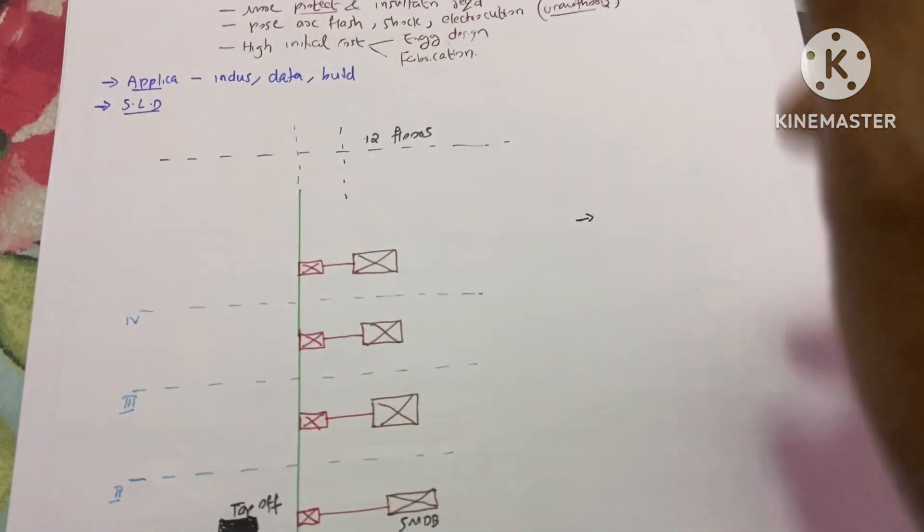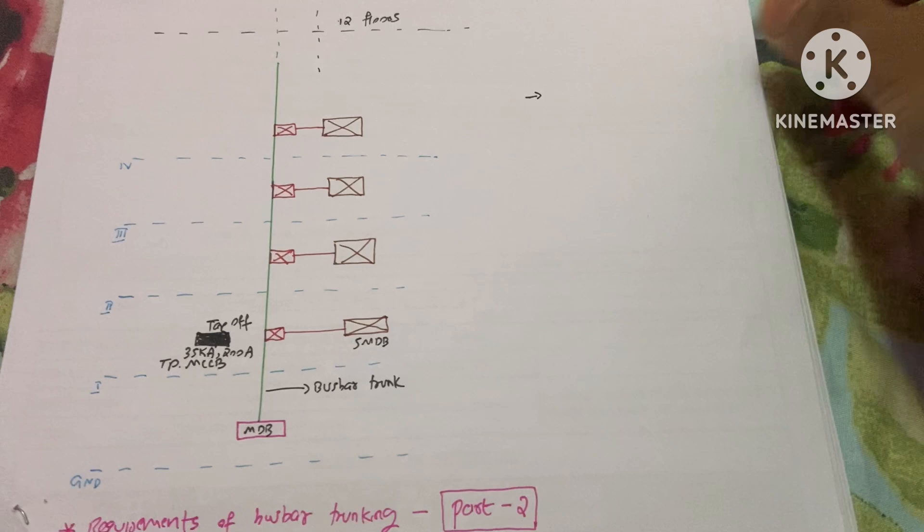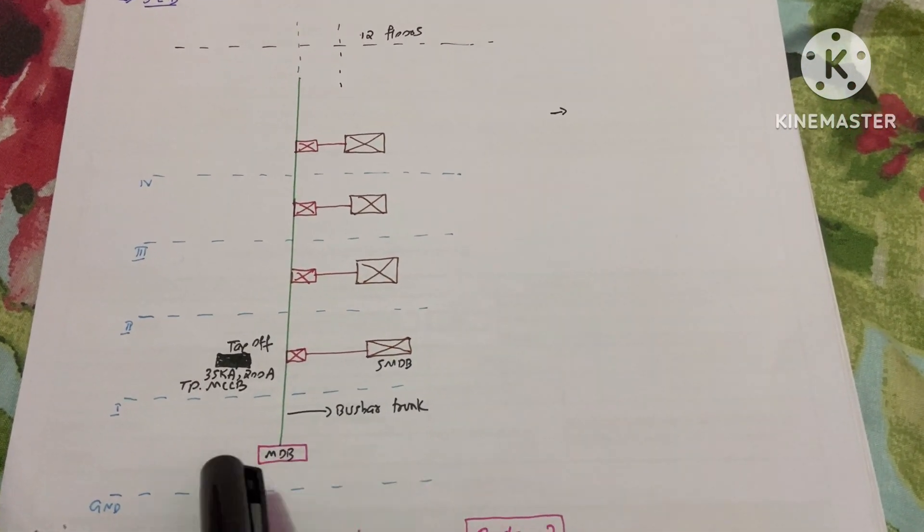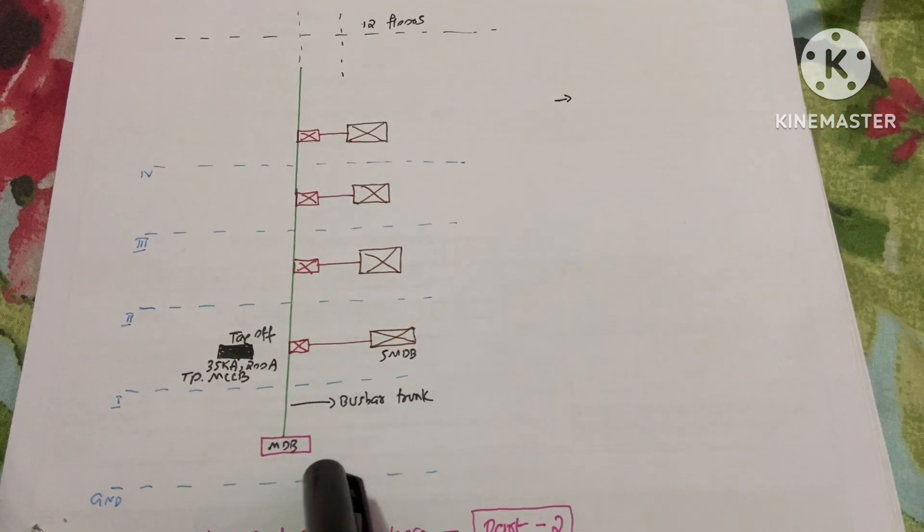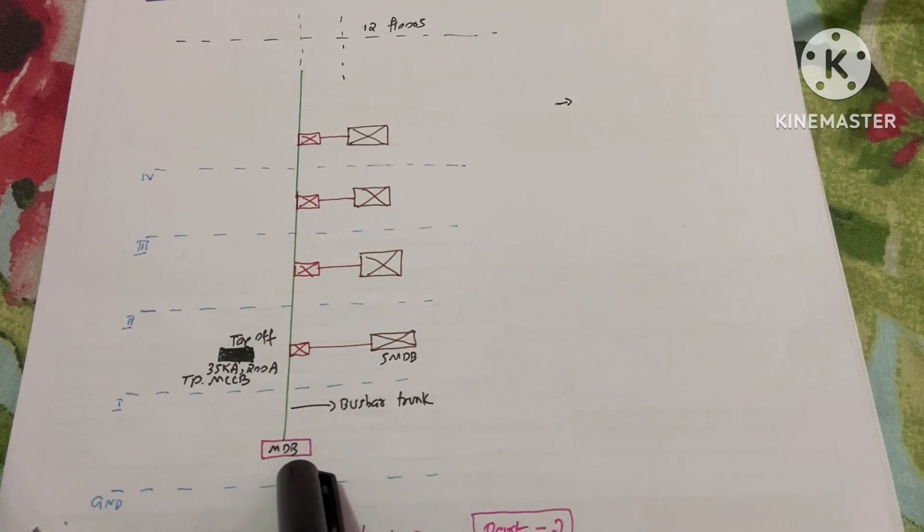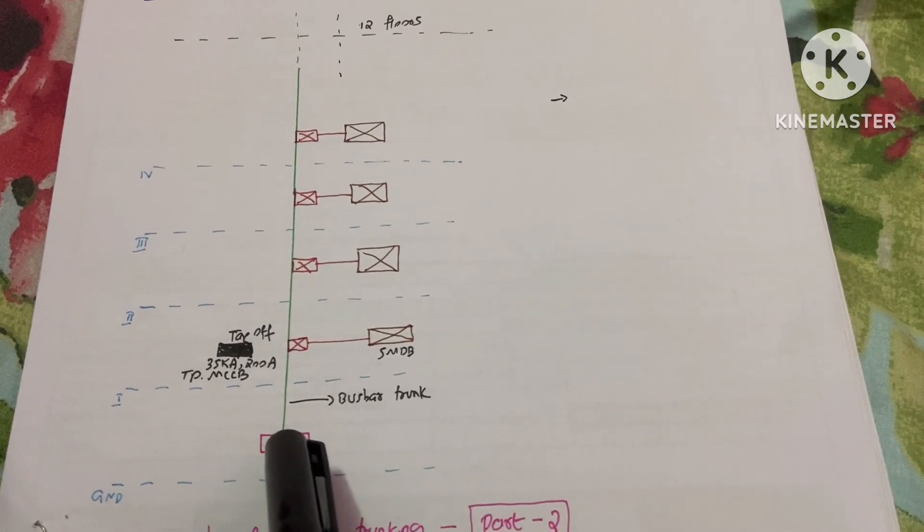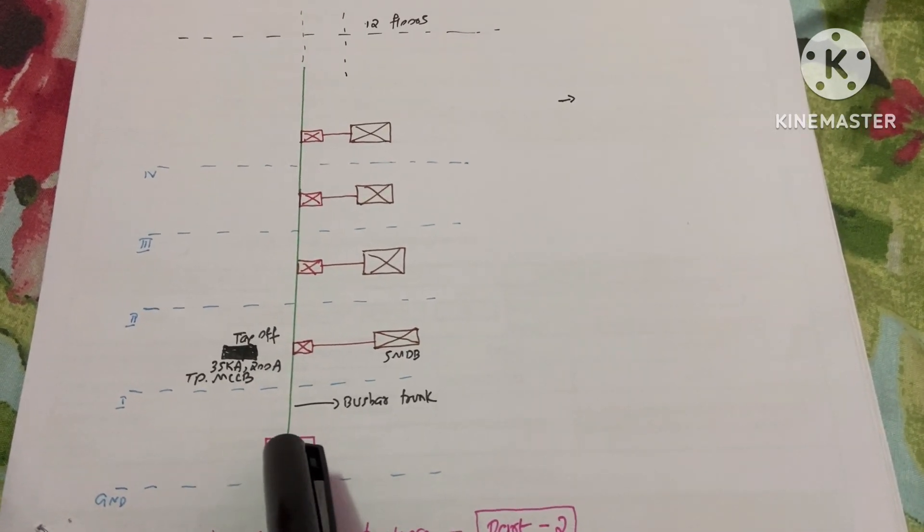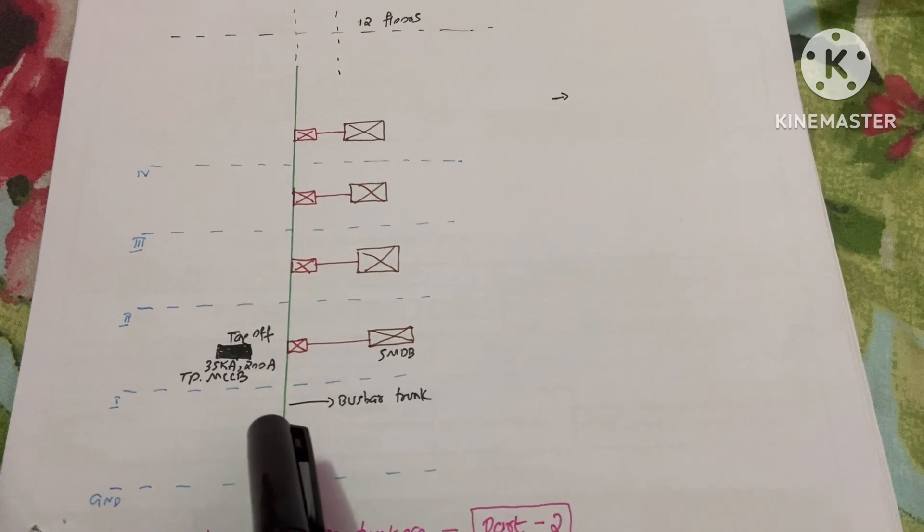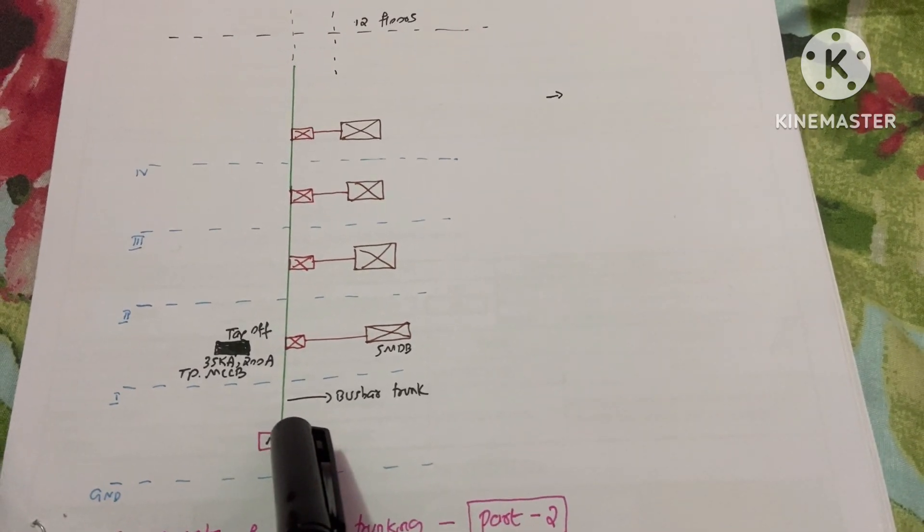Here we have a single line diagram. This is the ground floor, and this is the LV room. This MDB is located in the LV room, and from this MDB, our bus bar trunking is going through the riser to the top floors.